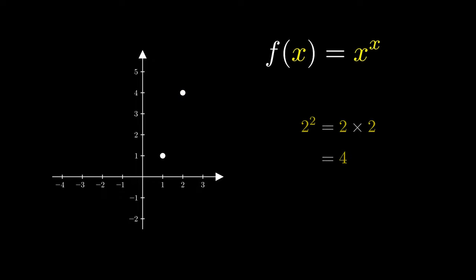When we consider x equals 3, we get 3 to the 3, which is 3 multiplied by itself 3 times. This gives us 27, but this is way too large for us to fit in our diagram.